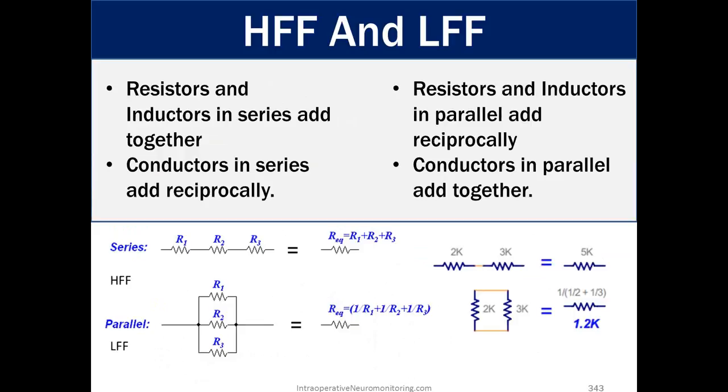High-frequency and low-frequency filters. Resistors and inductors in series add together, conductors in series add reciprocally. So we can see the high-frequency filter set up in resistors in series. And that equation ends up being the total sum of those R's is R1 plus R2 plus R3, whereas the low-frequency filter resistance is set up in parallel. The sum of that is 1 divided by R1 plus 1 divided by R2 plus 1 divided by R3.